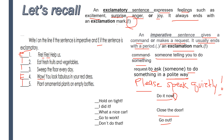I want you to try answering this. 'Hold on tight' — is this exclamatory or imperative? It's an imperative sentence. 'I did it! I did it!' — it's an exclamatory sentence. 'What a nice car' — exclamatory sentence. 'Go to work' — imperative. 'Don't do that' — imperative.